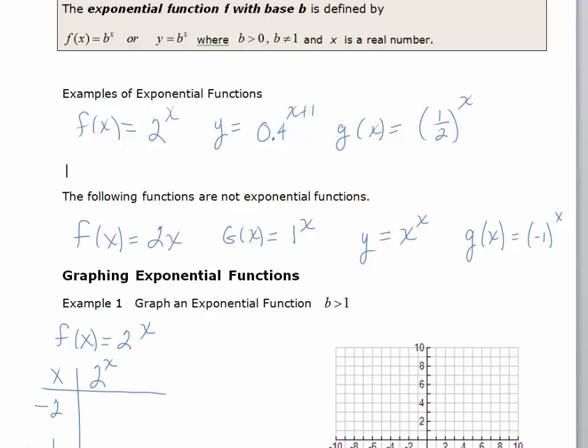Just looking at the definition, f(x) equals 2 times x, you do not have a variable exponent. In g(x) equals 1 to the x, you do have a variable exponent, but the base is equal to 1, which does not follow the definition.